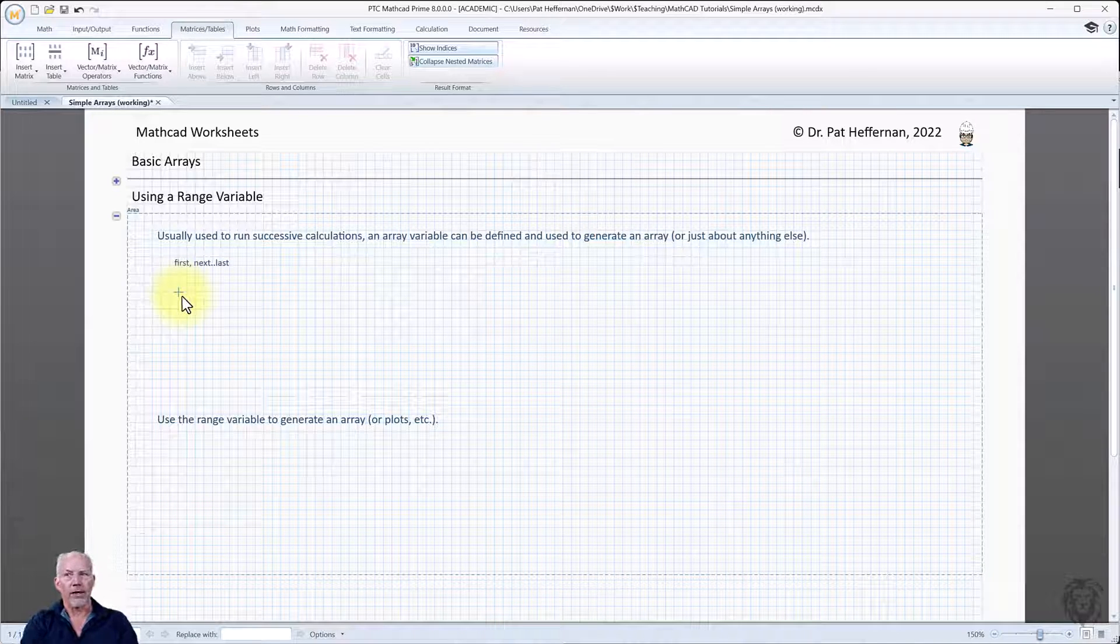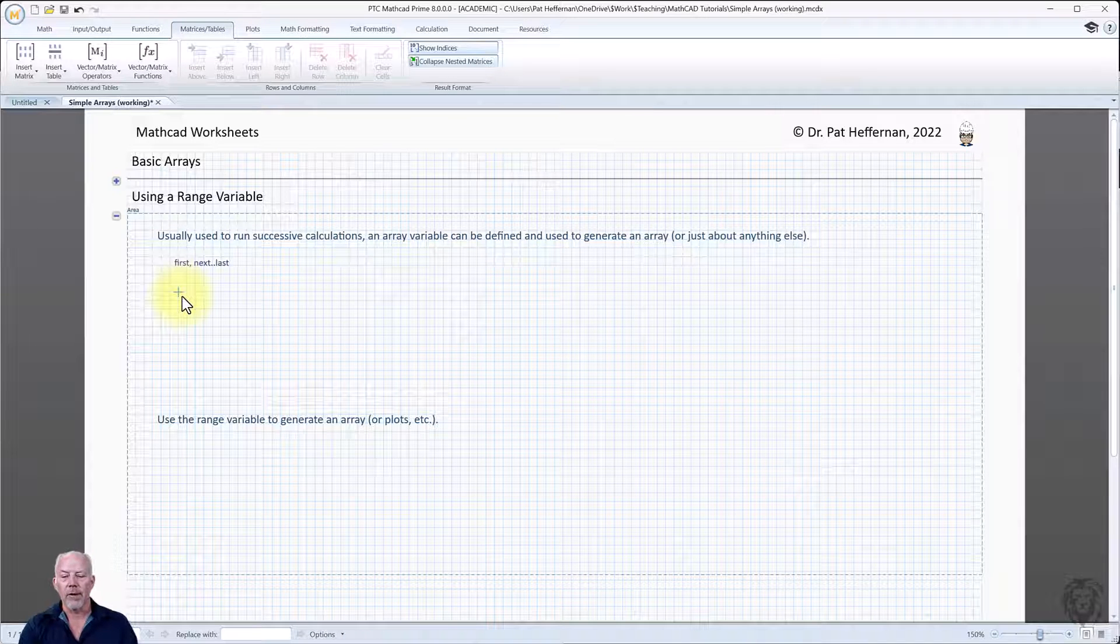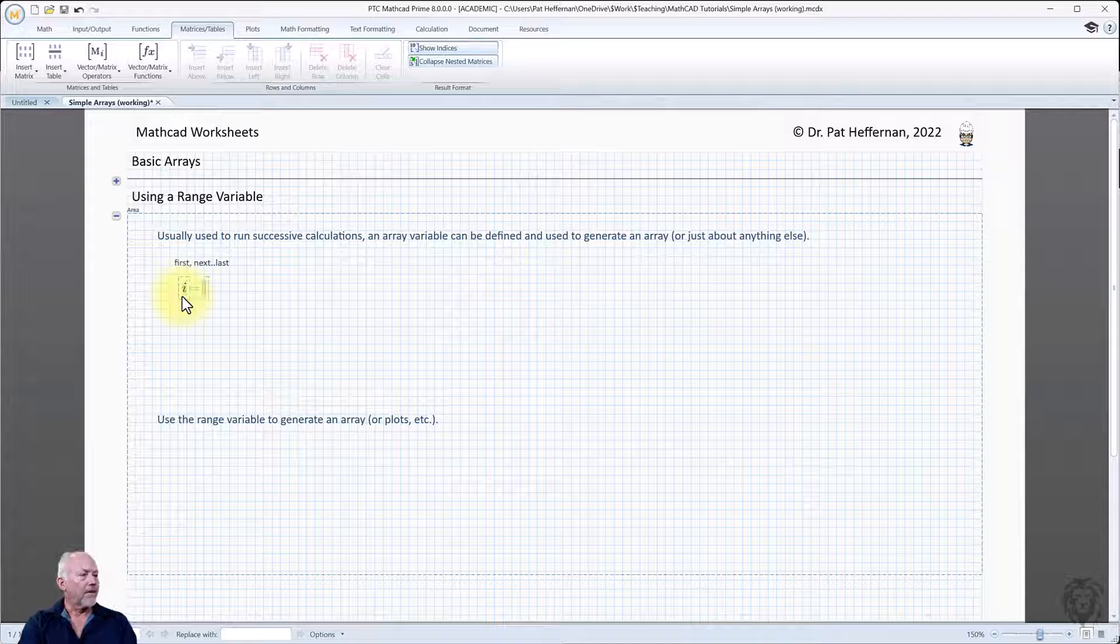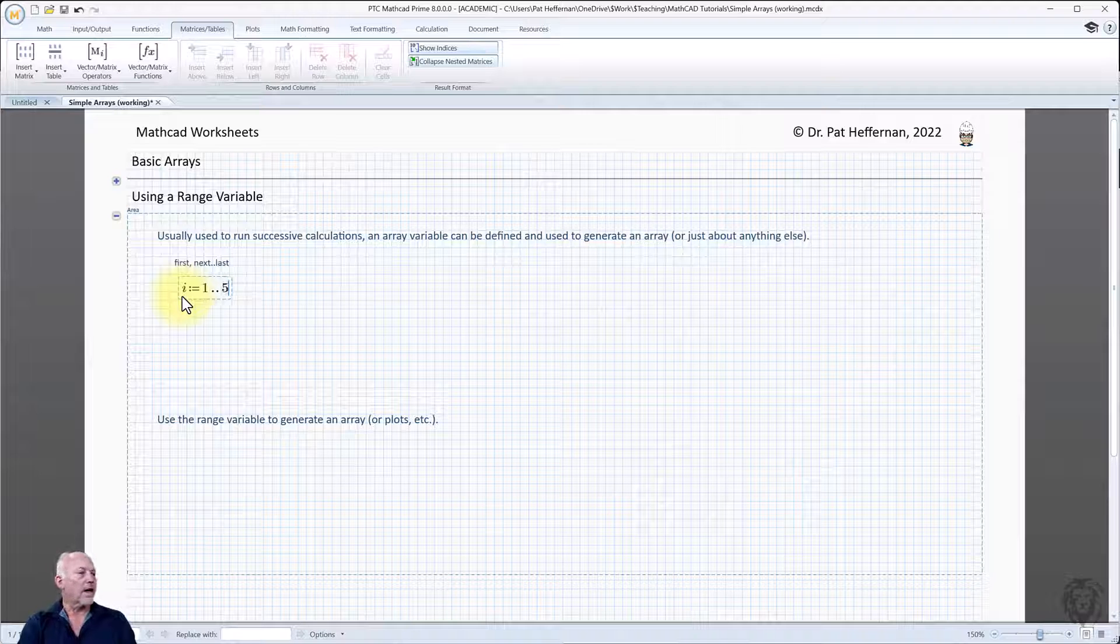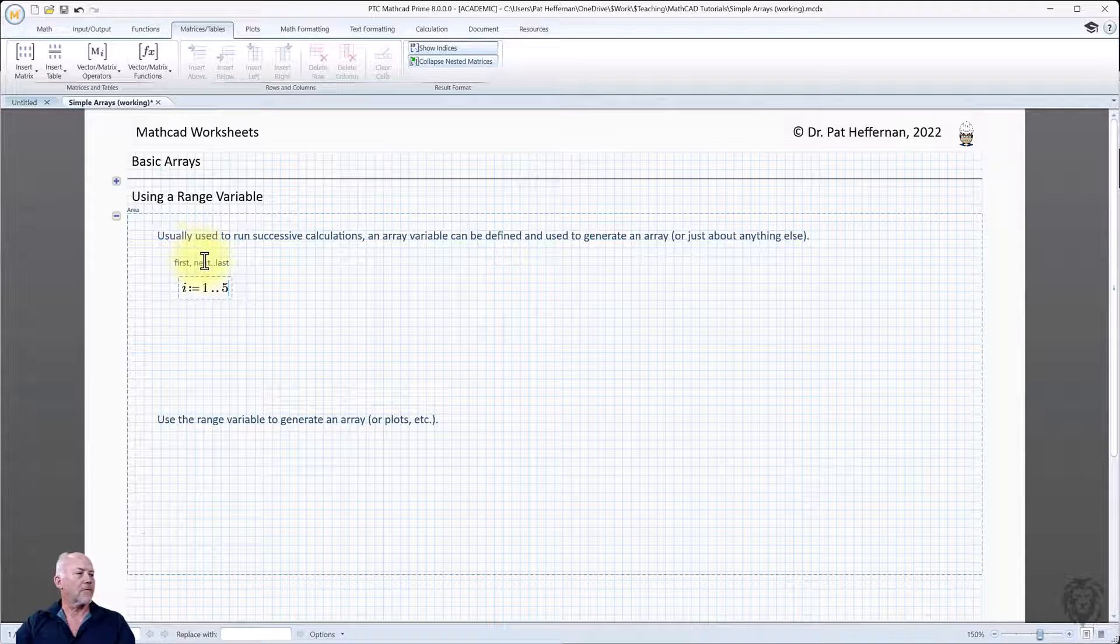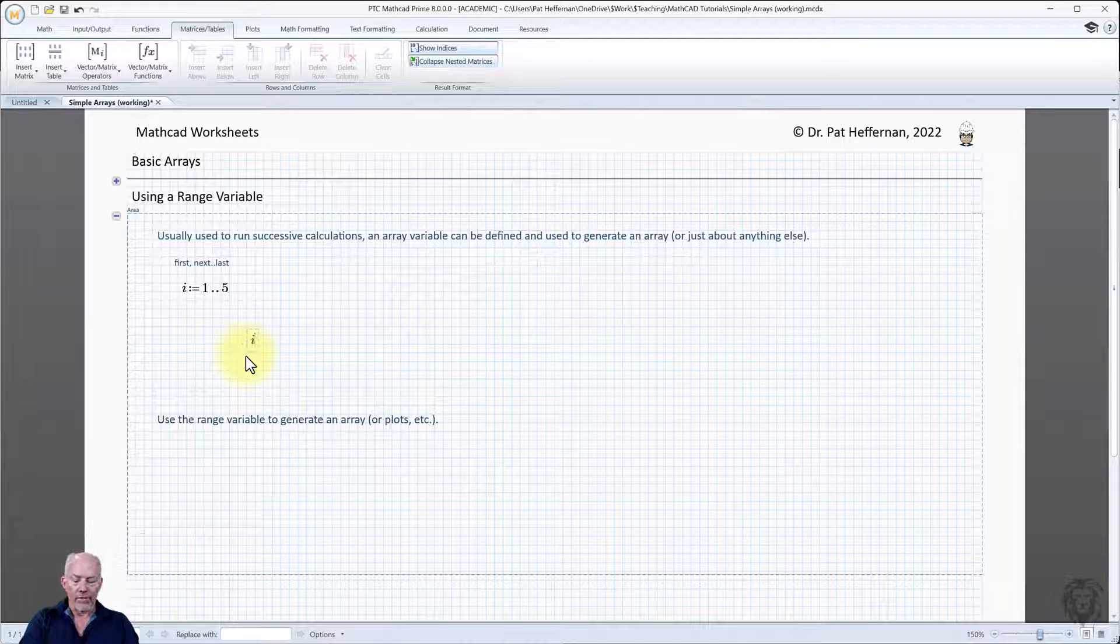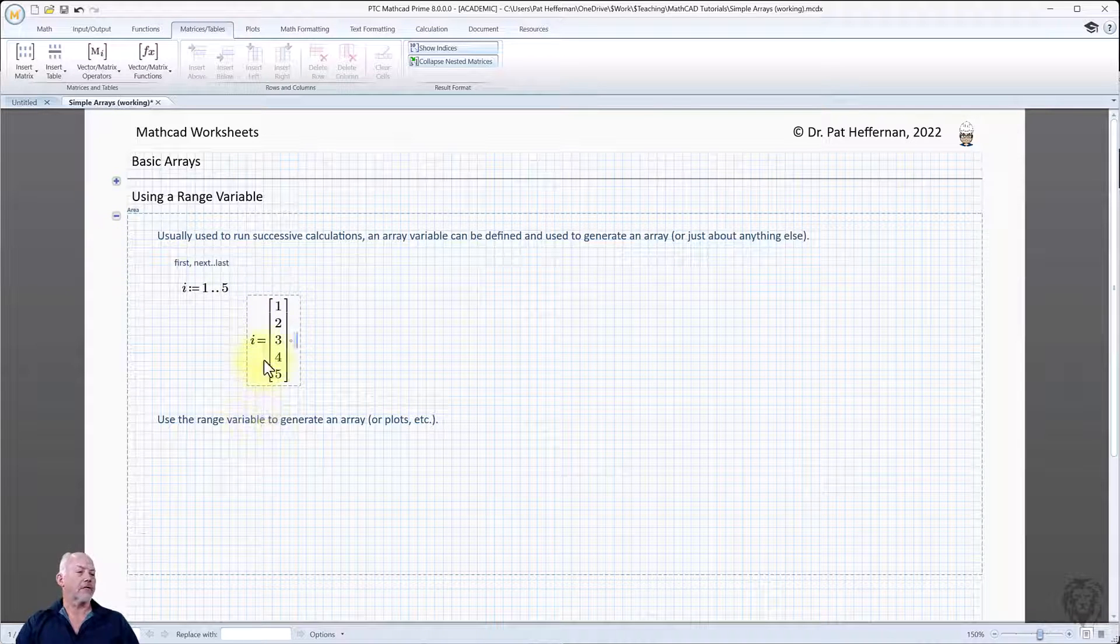And so the first range variable I'm going to do is I'm just going to increment by one and go from one to five. So I'm going to go I define it. And I'm going to go one and then dot, dot and choose five. Now, you say first, next, last. Well, the next, if you don't fill it out, is actually assumed to be one. And so that's what we're going to see here. And I'll do another example where we explicitly give the step increment. And so now, if I go I equals, we can see we have this range variable, one, two, three, four, five, going down.